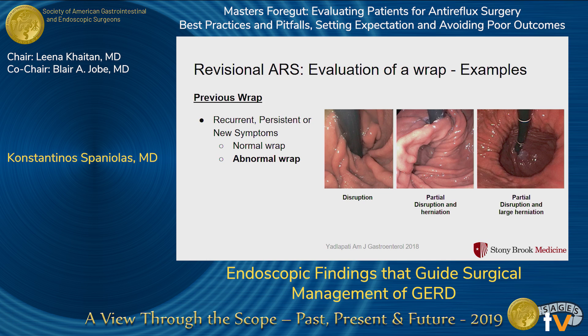These are examples of patients with previous fundoplication. The first shows complete disruption of the wrap. The second shows a residual valve resembling a Toupet, but based on twisting next to it, was probably a failed Nissen, with some herniation visible as well. The third shows a pretty large hernia and a partial disruption of the wrap.